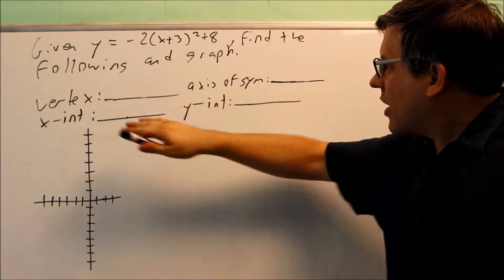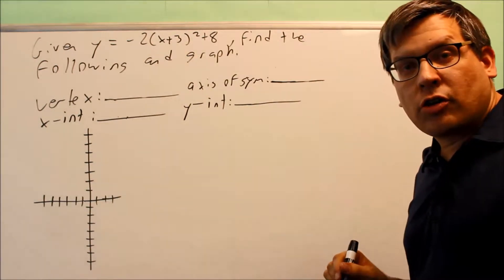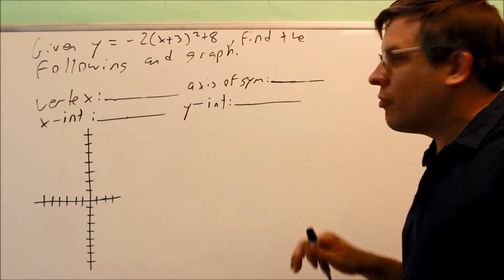By finding the vertex and the intercepts, that's going to give you enough information to where you can eventually draw your graph. So that's why we've got to start and fill this information out first.